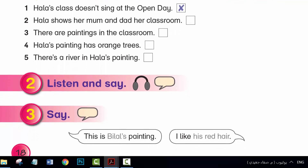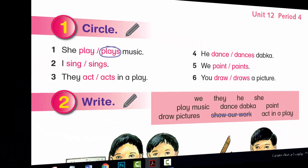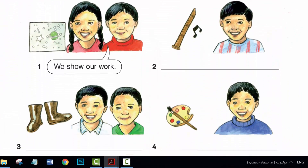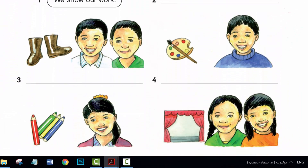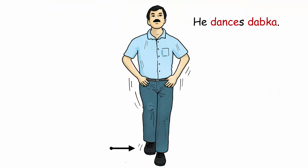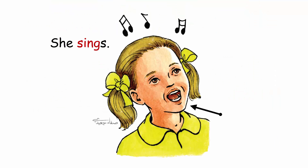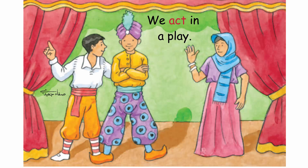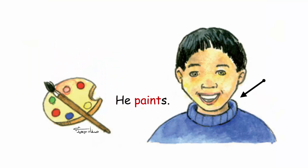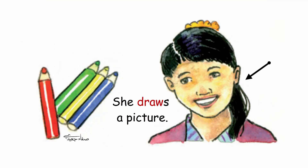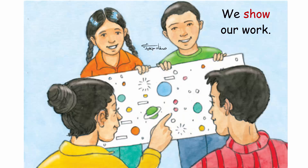Unit 12, Period 3 and Period 4. Language Presentation: He dances Dabka. She sings. We act in a play. He paints. She draws a picture. We show our work.